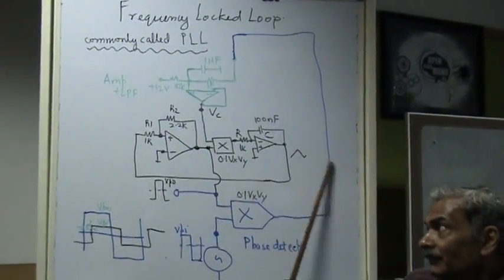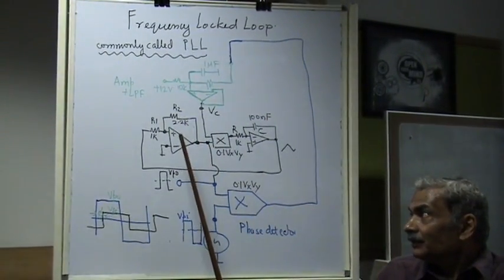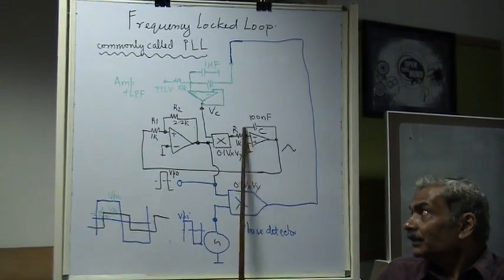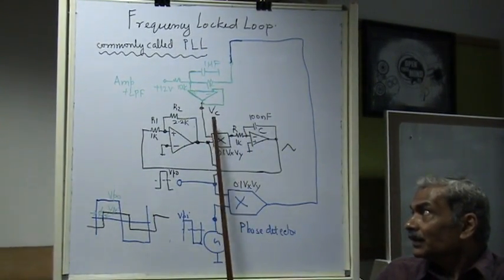This is the VCO which we had discussed earlier. It is made up of the speed trigger integrator multiplier loop. So, this is the linear VCO.